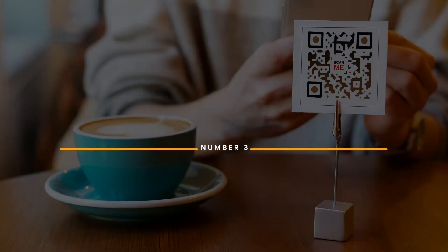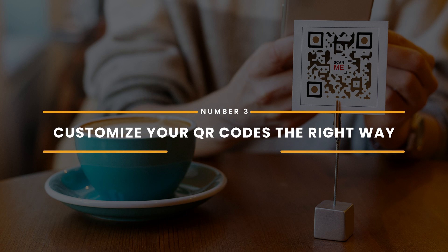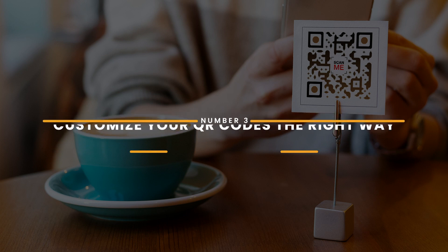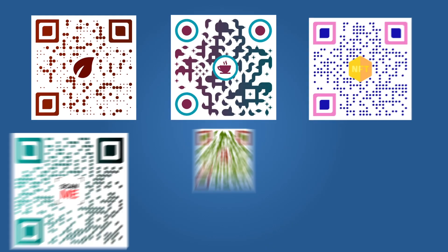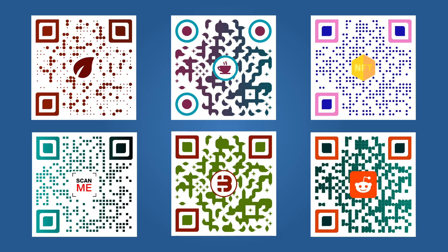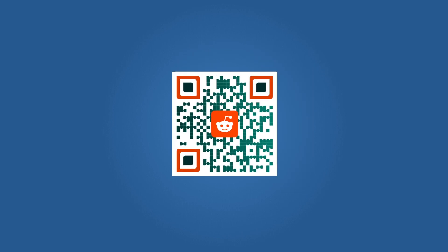Number 3: Customize your QR codes the right way. Keep in mind the rule of thumb when customizing your QR code colors — the foreground should always be darker than the background. This is to ensure that your QR codes are scannable on any device and lighting condition.